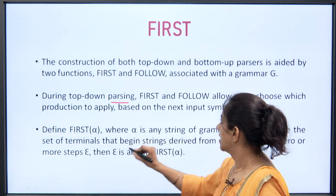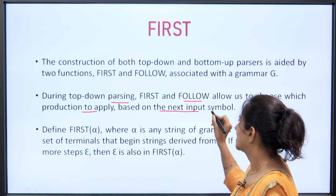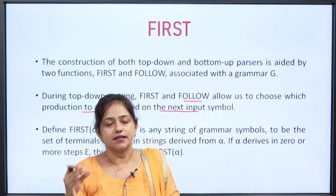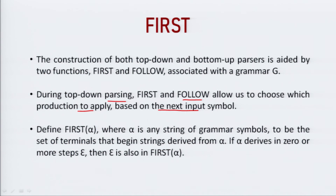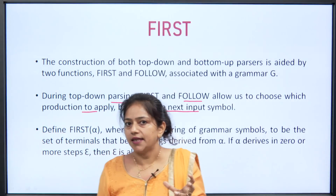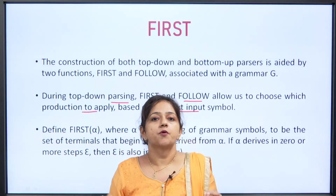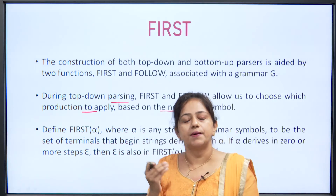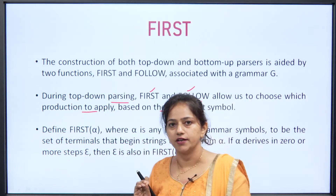During top-down parsing, FIRST and FOLLOW allow us to choose which production to apply based on the next input symbol. In top-down parsing, we start from the start symbol of the grammar and expand non-terminals until we reach terminals. The problem is which production to select first, and these functions help us select a particular production. We need to understand what the FIRST function and the FOLLOW function are.